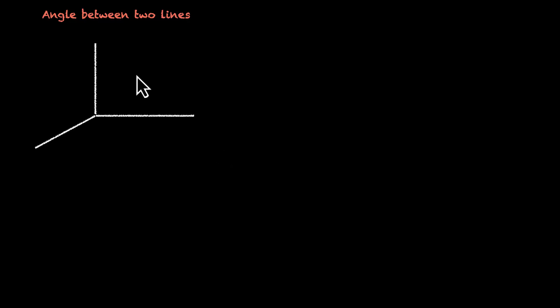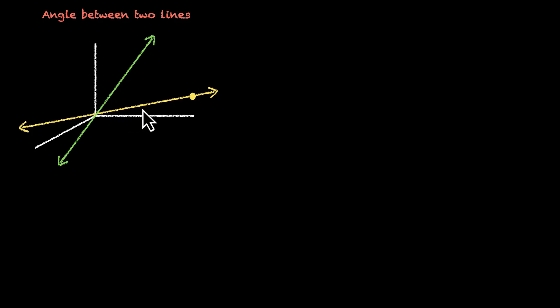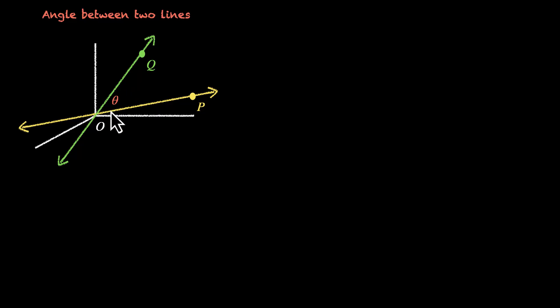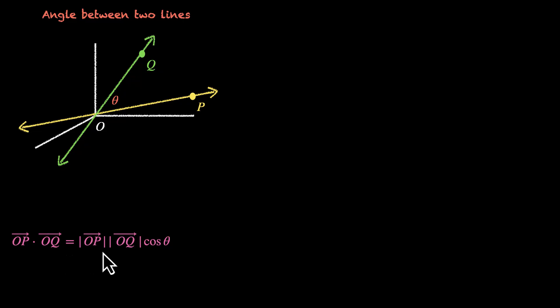How do we find the angle between two vectors? Let's say we have these two lines and we have two points on these lines, P and Q. This is the origin. So let's form two vectors, OP vector and OQ vector. We want to find the angle between these two vectors — that's theta.